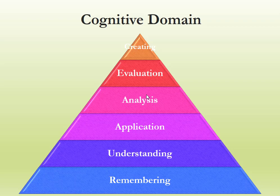Creating, evaluation, and analysis are the highest levels of cognitive domain, while remembering and understanding are the lower levels. The top tier is also called HOT — Higher Order Thinking. If you want to measure a student's higher thinking, you must create a question or assessment tool that can assess the student's creating ability, evaluating ability, and analysis ability. Remembering and understanding are the lowest levels of cognitive domain.